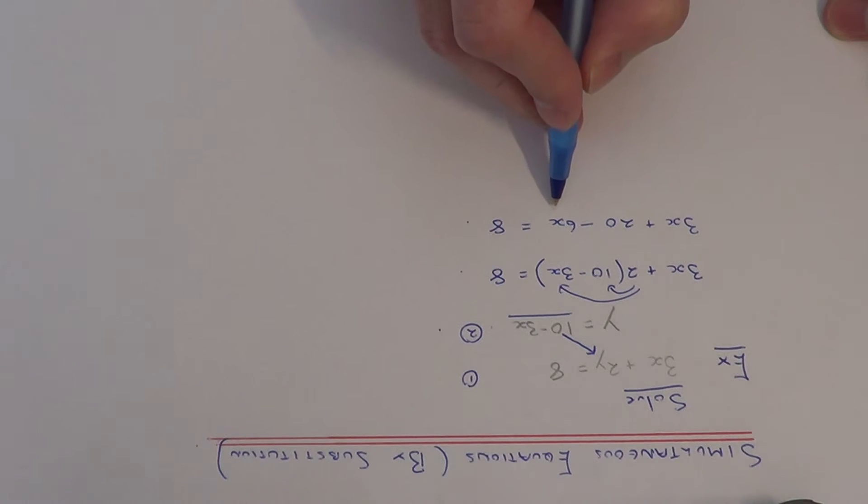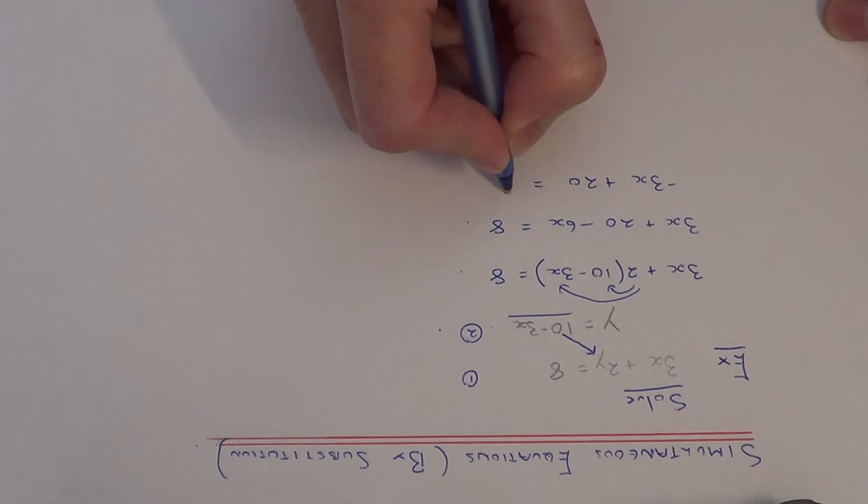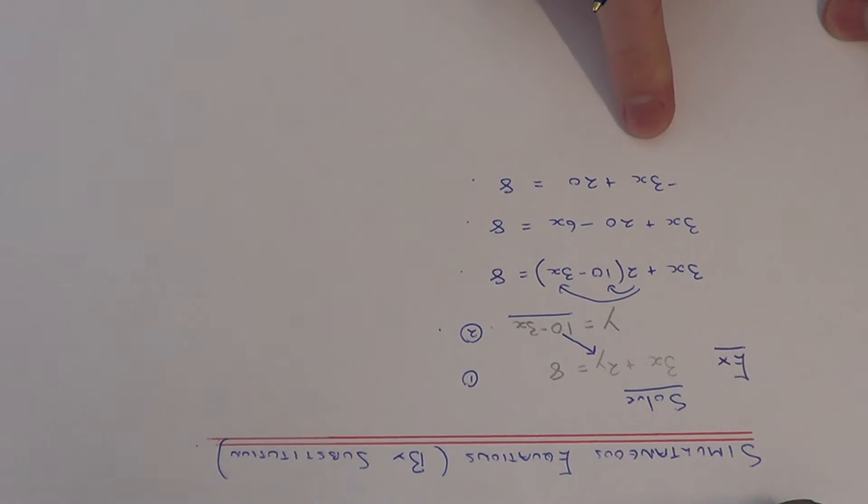So if we just simplify the left-hand side, 3x minus 6x is minus 3x, and we've got plus 20 equals 8.